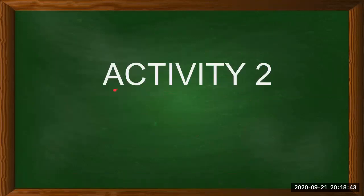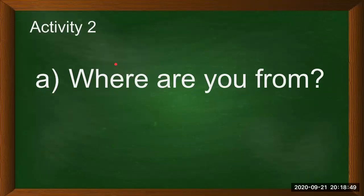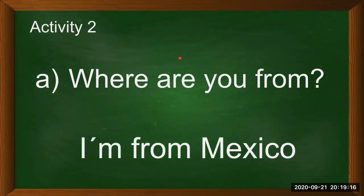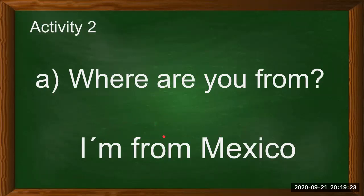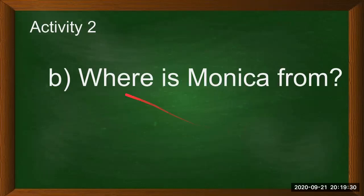Activity number two — Actividad número dos. Answer the questions according to the information given — Responde las preguntas de acuerdo a la información proporcionada. A. Where are you from? ¿De dónde eres? I'm from Mexico. Soy de México.